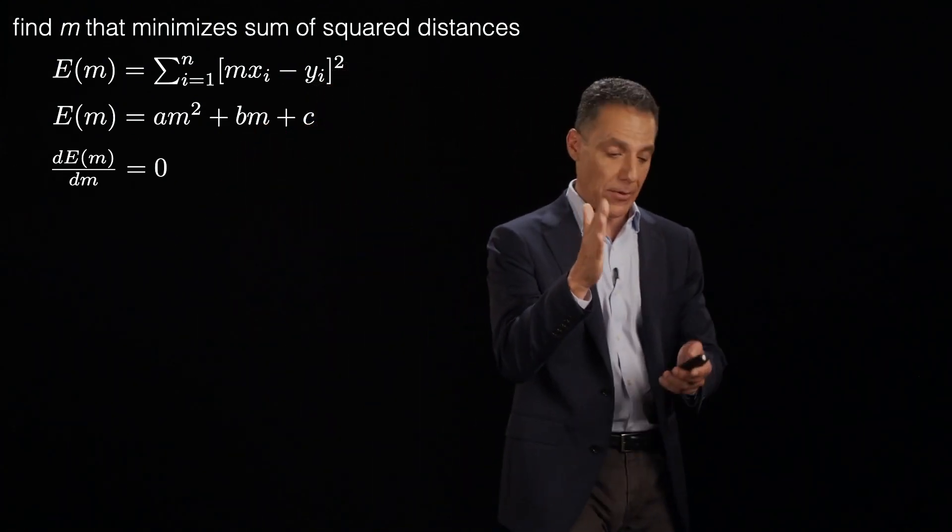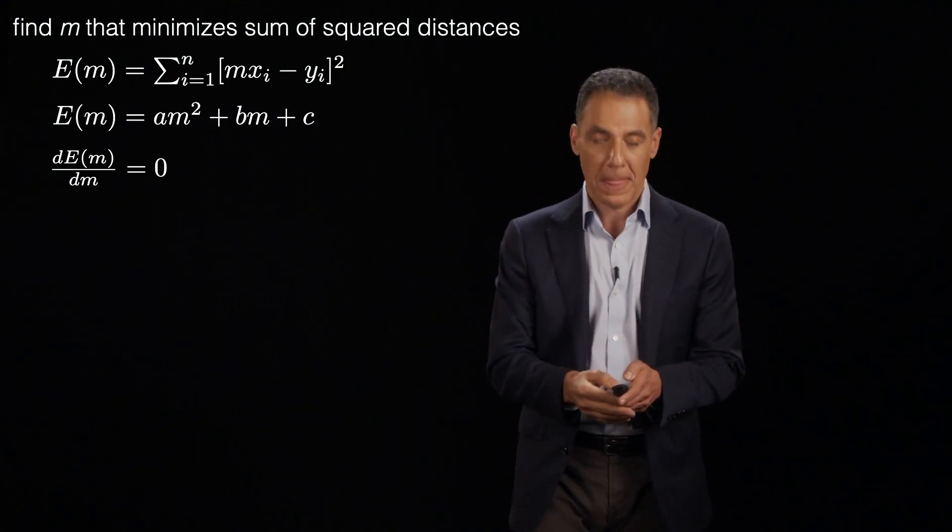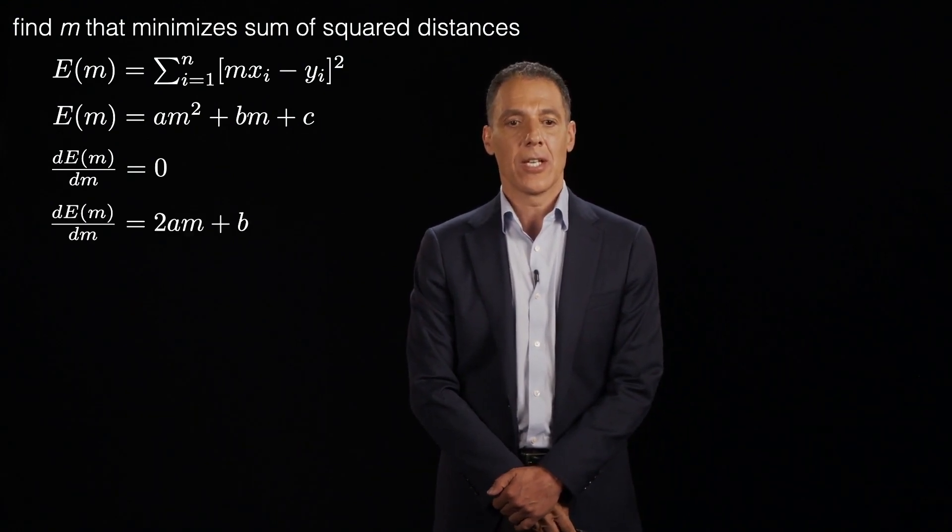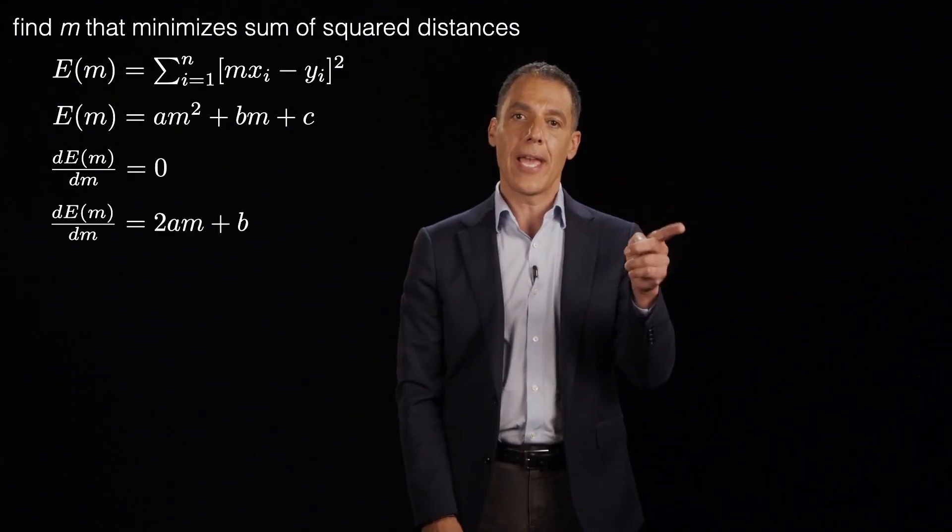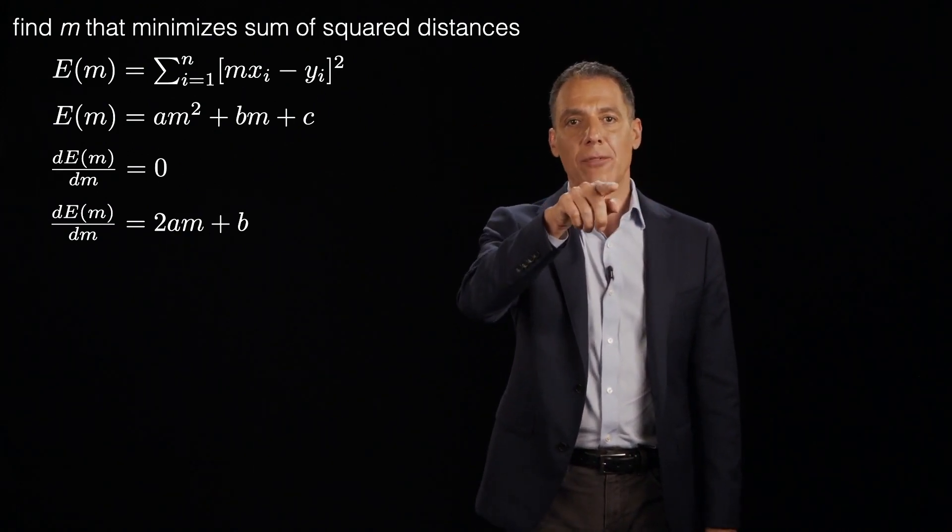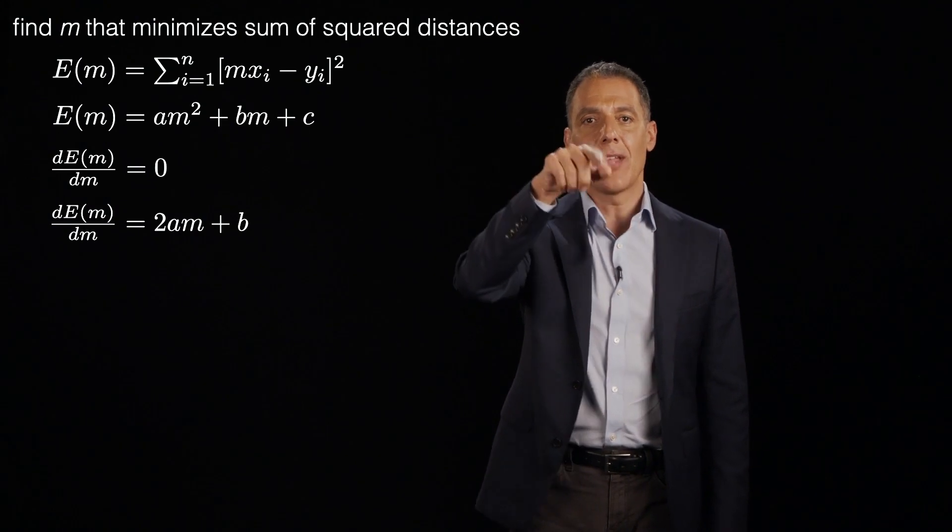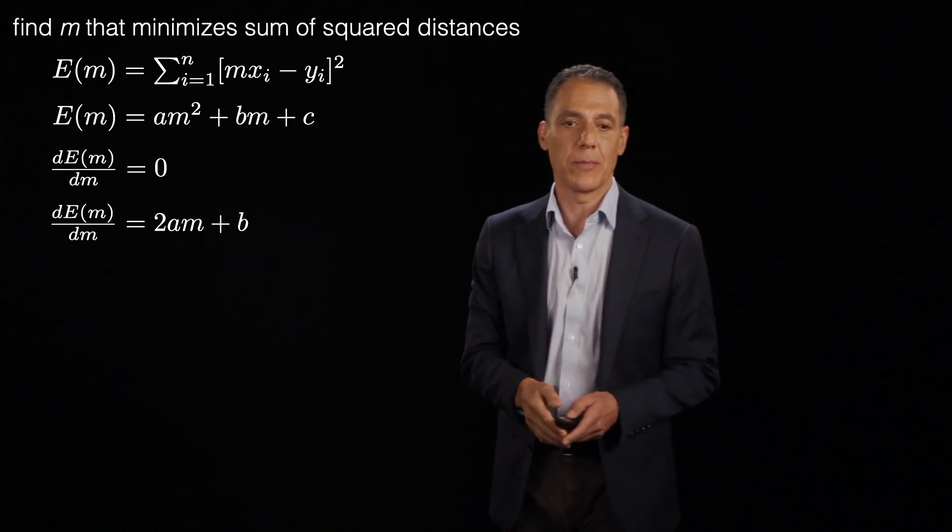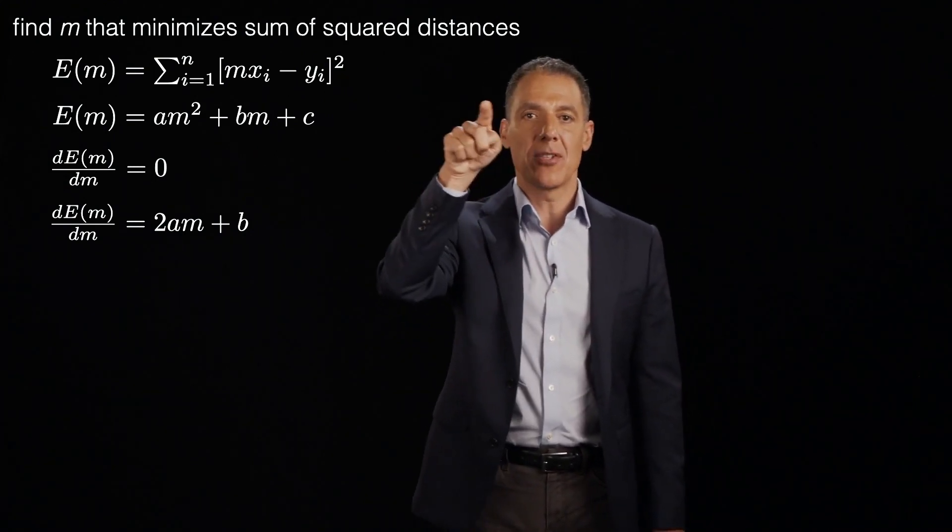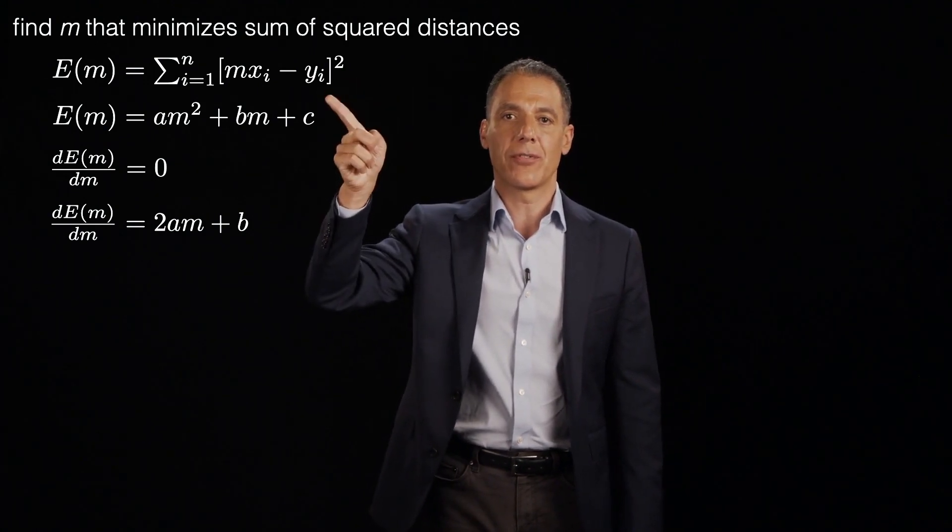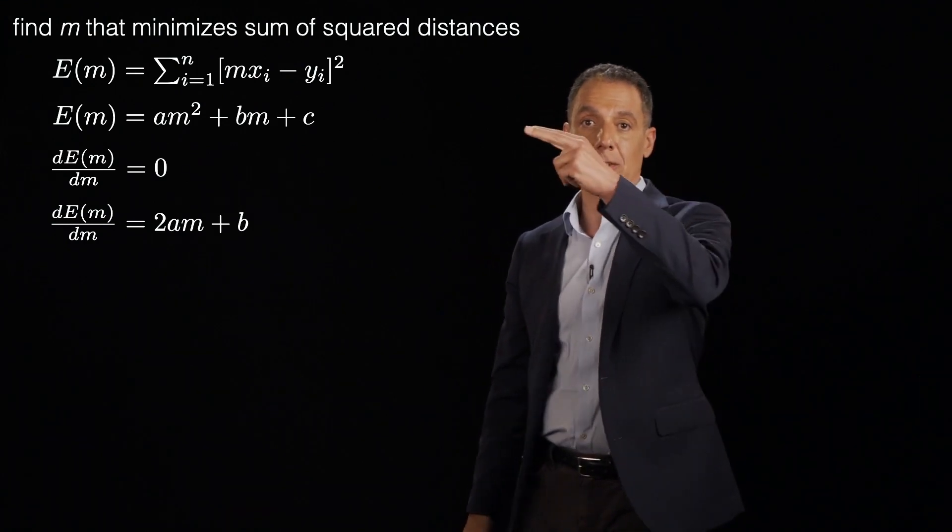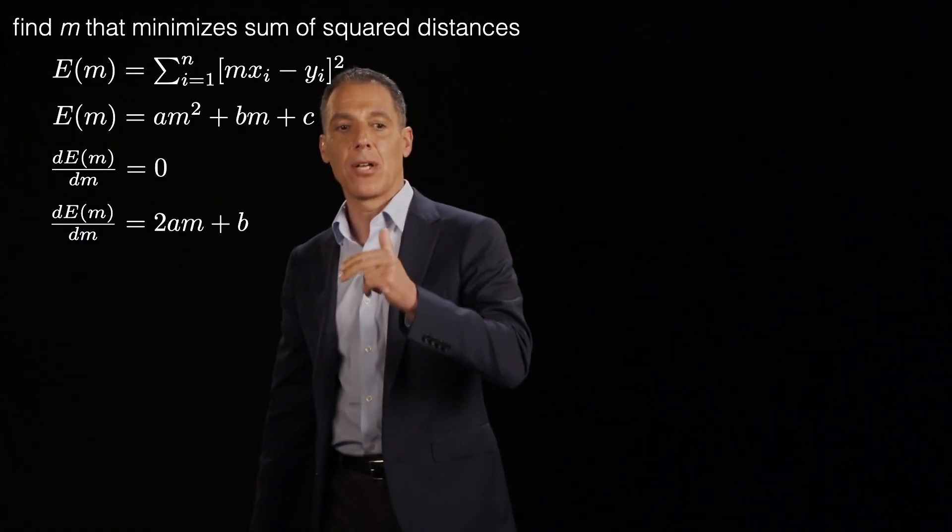So the derivative of my error function as a function of m should be equal to zero, and that will tell me the value of m that corresponds to that minimum. All right, let's remember how to do derivatives. This is a pretty easy thing to differentiate. So the derivative of the error function is 2am. So remember the power comes down, the a of course is a scale factor so it stays, and then you raise it to the power of one minus what it was before. The derivative of bm, m to the one, the one comes out, m to the zero now, so m goes away. And of course the derivative of c is simply zero. So the derivative of my quadratic error function right there is 2am plus b.